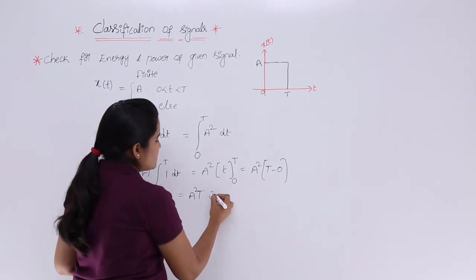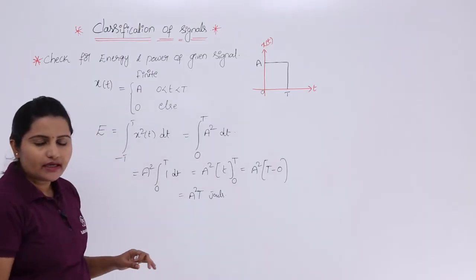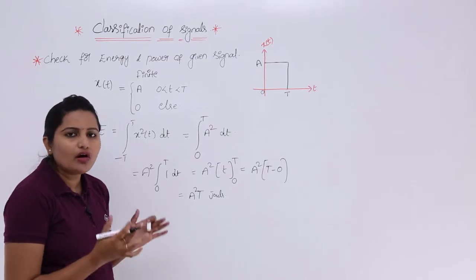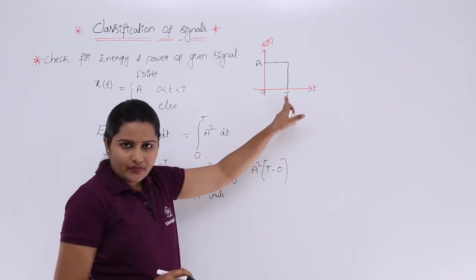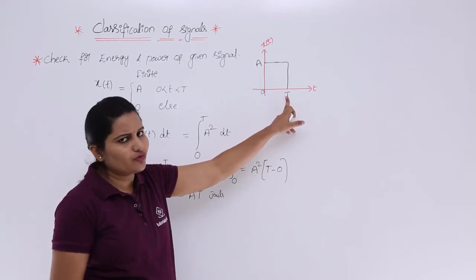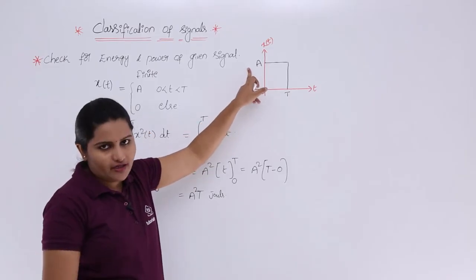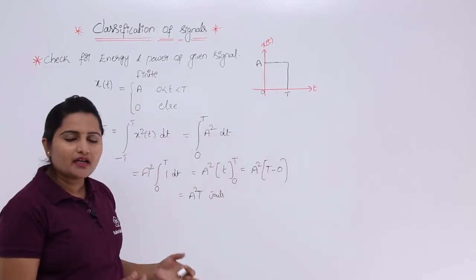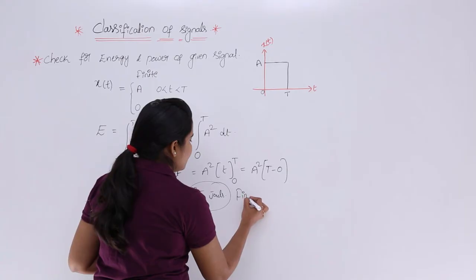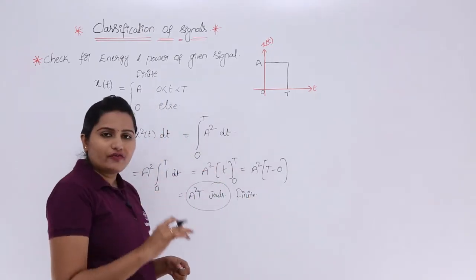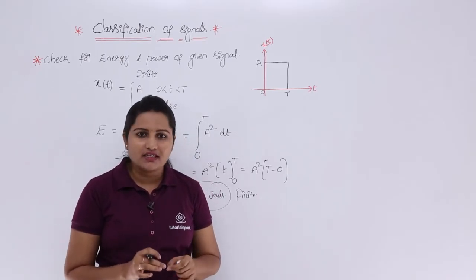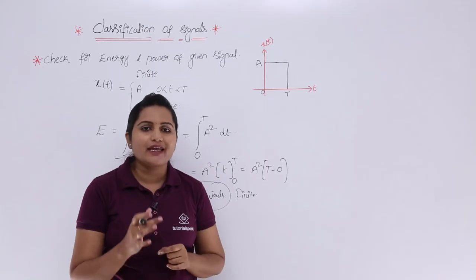So that is in joules — energy is always calculated in joules. Here A²T is a constant finite value. T is a finite duration interval — that may be 2 seconds, 3 seconds, 4 seconds or anything. A is also a finite value. Total value is finite. So whatever energy we calculated, that is finite. According to the definition of an energy signal, whenever we observe the energy of the signal is finite, then that signal is said to be an energy signal.